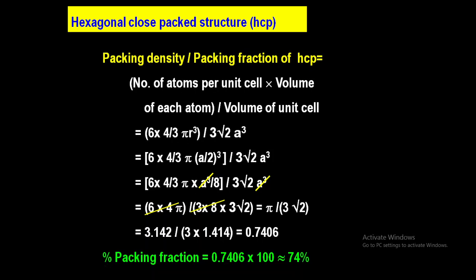So the packing fraction of the hexagonal close-packed structure is 74%, which is equal to the packing fraction of the face-centred cubic (FCC) structure. FCC also has a packing fraction of 74%. This means packing fraction of HCP equals packing fraction of FCC. A common exam question asks to show that packing fractions of HCP and FCC are the same. Thank you.